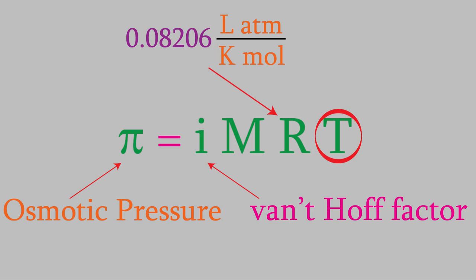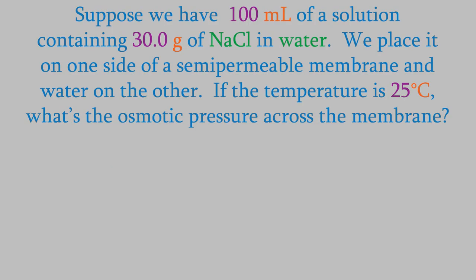Let's try an example. Suppose we have 100 milliliters of a solution containing 30 grams of sodium chloride dissolved in water. We put this on one side of a semipermeable membrane and pure water on the other side, and the temperature is 25.0 degrees Celsius. What will be the osmotic pressure across the membrane?